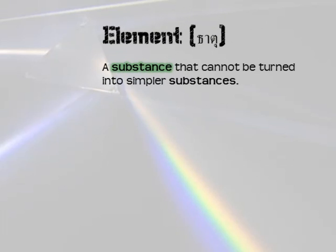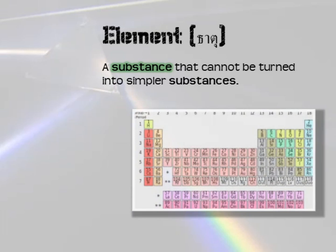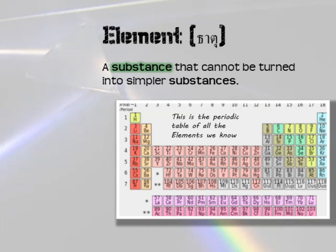An element is a substance that cannot be turned into simpler substances. An atom is the smallest unit of a chemical element — if you take an atom of helium and break it up, you do not have helium anymore. If you take an atom of oxygen and break it up, you do not have oxygen anymore. You cannot make it smaller. This is the periodic table — these are all the elements we know. There are 118 right now, but maybe we will find more in the future.